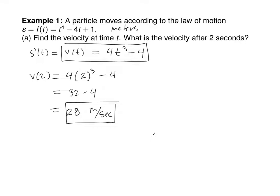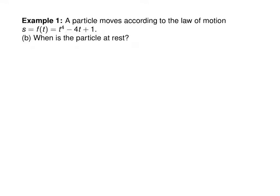Question B says, when is the particle at rest? If the particle is at rest, it means it's not moving. Set the velocity equal to 0. So that was 4t^3 minus 4 equal to 0. 4t^3 equals 4, t^3 is 1, so t is equal to 1. So after 1 second, the particle's at rest.